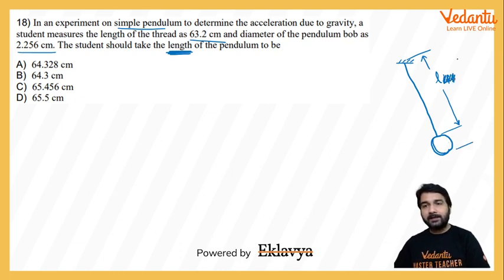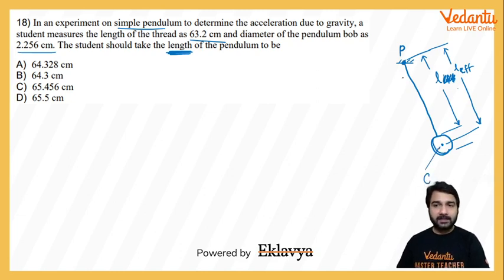Now try to understand, the length of the pendulum is not the length of thread. Please observe, if we take length of thread as L, then the effective length of the entire pendulum is this distance - which distance? From point of suspension P to the center of mass of this body, let's say C. So the length between point P and C is what we know as length of pendulum, right?